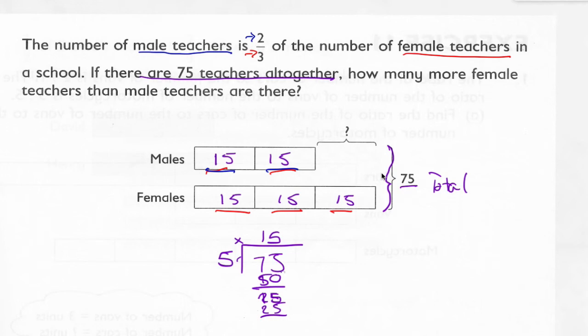Now, it should be easy to tell how many more female teachers there are. At this point, that's an equal amount of males and females. But there's this extra section of tape right here. That's 15 female teachers. So the answer would be 15.